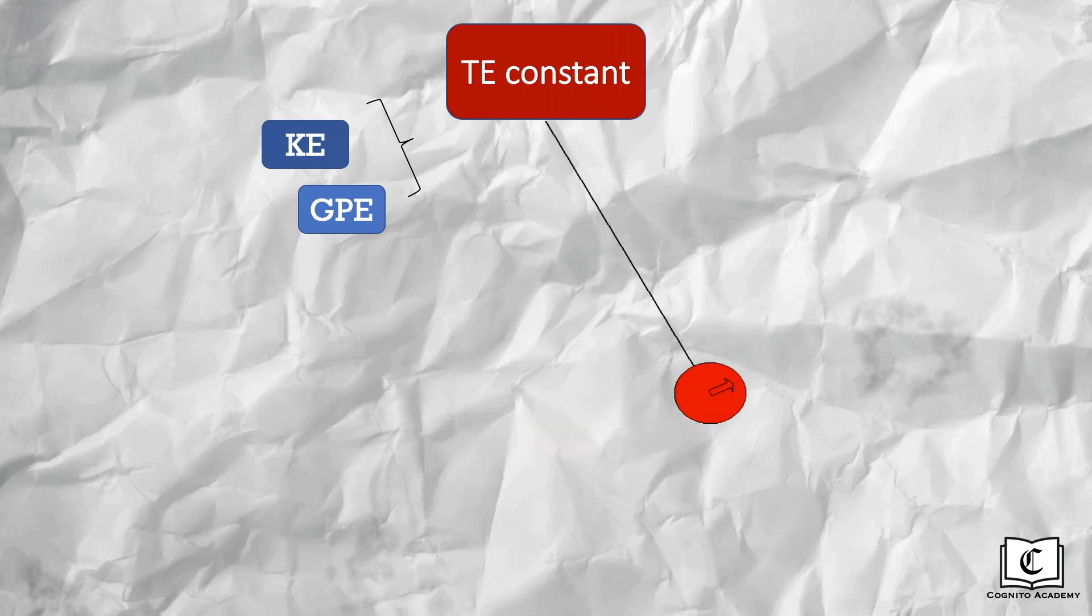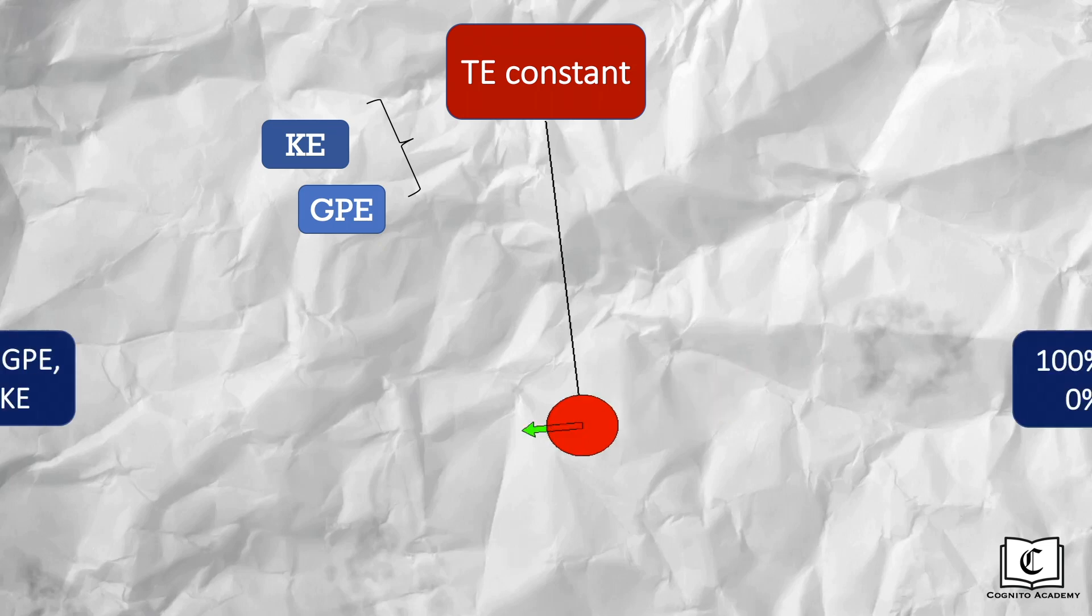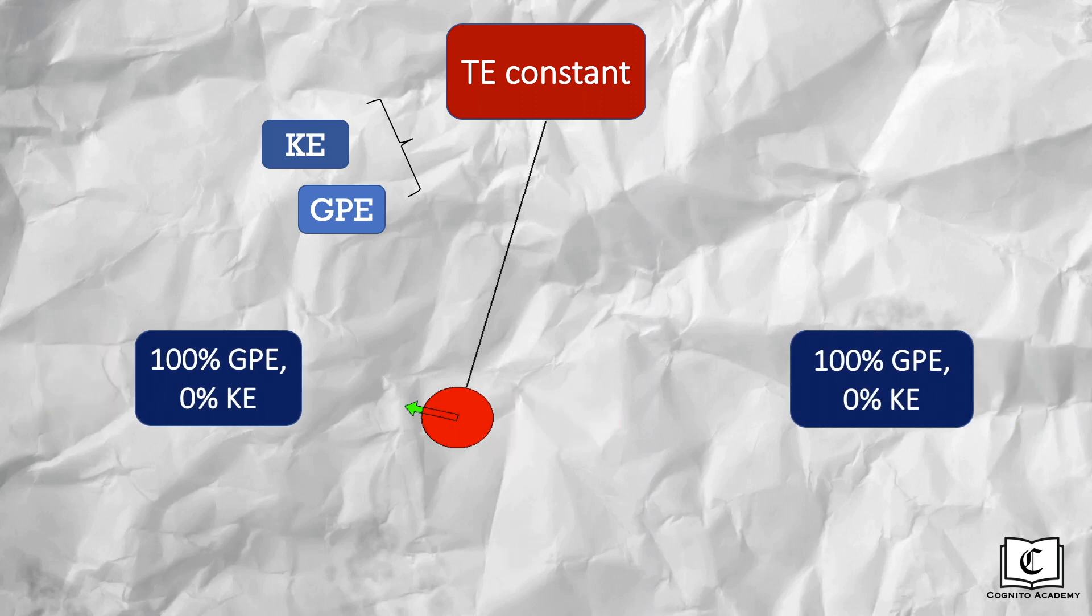When the ball is at its highest point, at its ends, it has no velocity as it is stopped momentarily at the ends. Hence, it has no kinetic energy. Therefore, all its energy has to come from gravitational potential energy. And this is so because it is at its highest height.